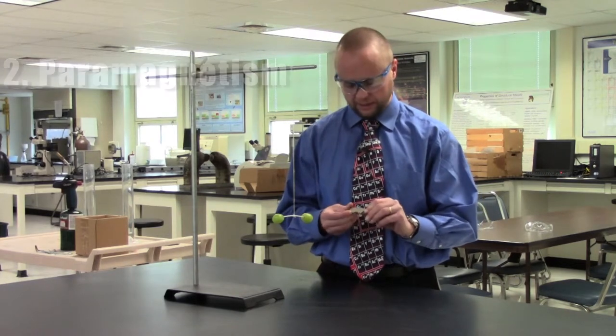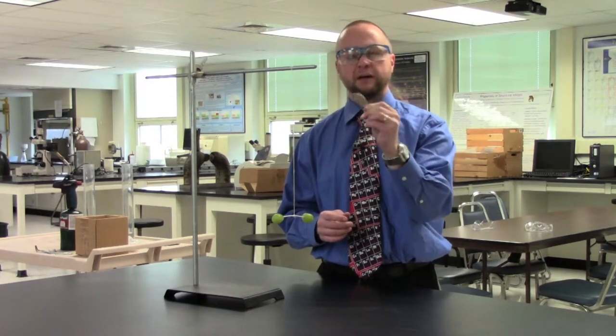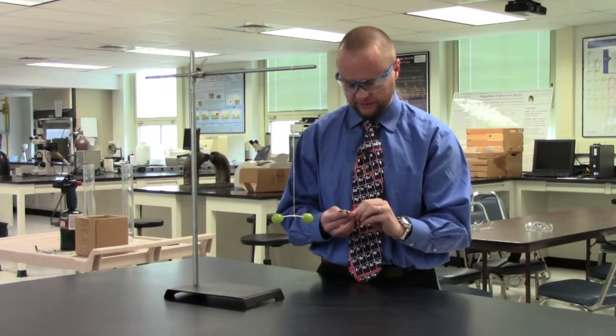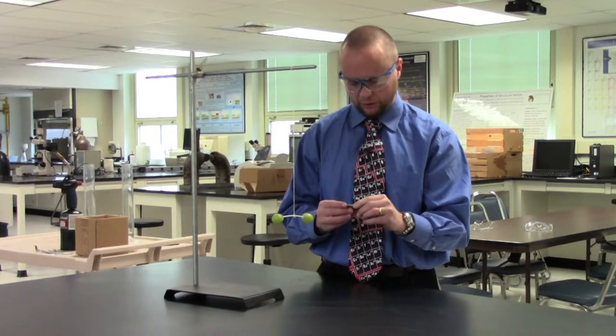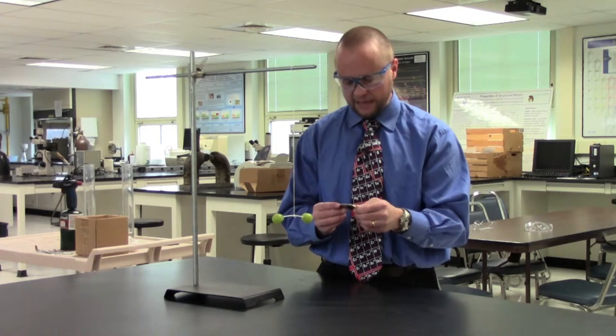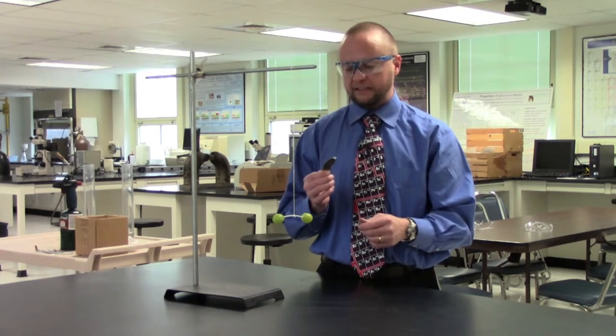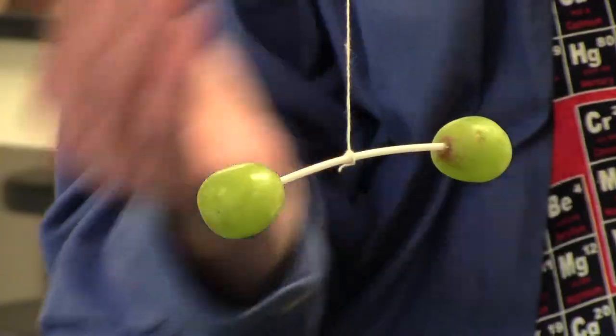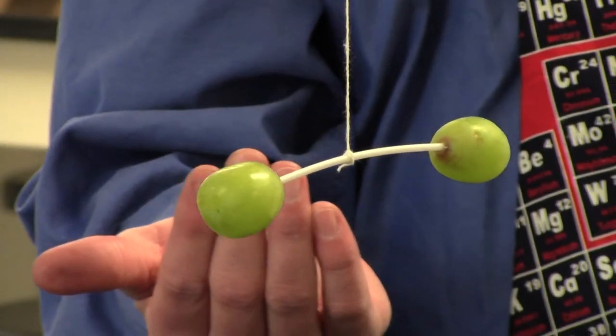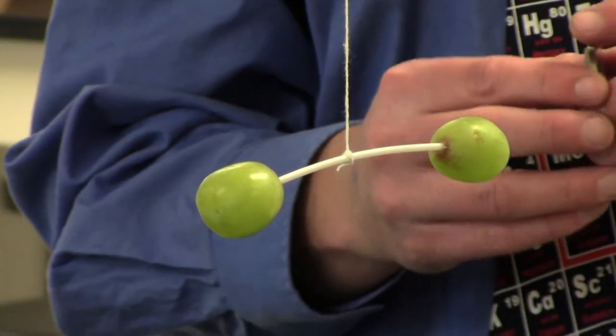And so the strong magnetic field is going to be produced by this neodymium magnet that I actually borrowed from a hard drive that no longer works. And this magnet I'm going to use to push the grapes around in a circle by exposing them to this magnetic field.